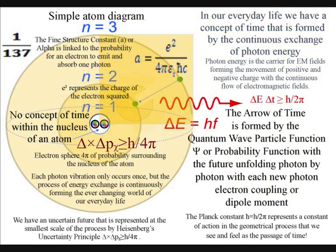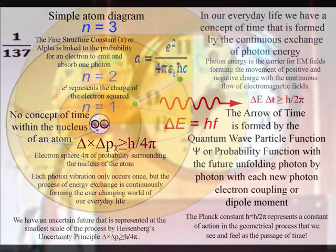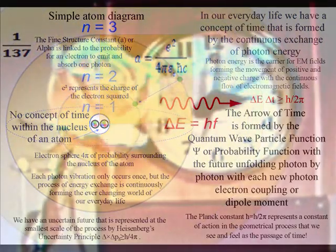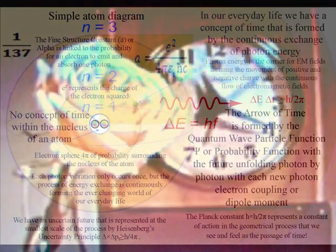At that moment in time, we have the absorption and emission of light, called a photon-electron coupling, or dipole moment. This continuous process of energy exchange forms the ever-changing world of our everyday life that we measure as a period of time.